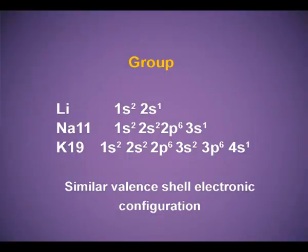Let us take an example of a group — lithium, sodium, potassium; they are all alkali metals, the first group elements. Lithium (atomic number 3): 1s2, 2s1. Sodium (atomic number 11): 1s2, 2s2, 2p6, 3s1. Potassium (atomic number 19): 1s2, 2s2, 2p6, 3s2, 3p6, 4s1. From the electronic configurations, we can compare that they all have similar valence shell electronic configuration and hence similar properties, and are grouped together in the first group.